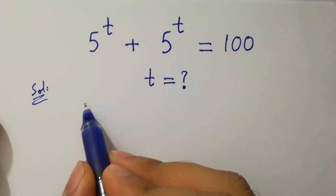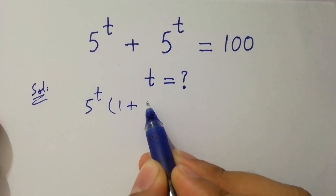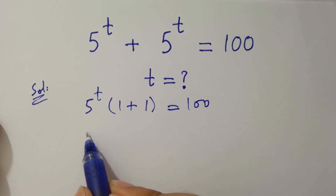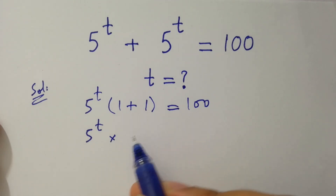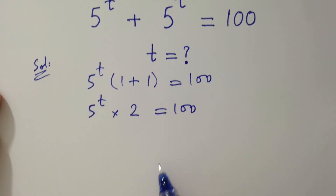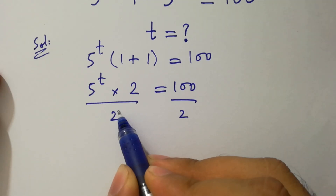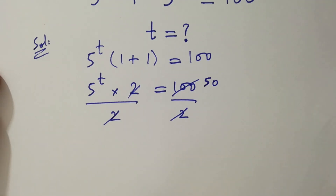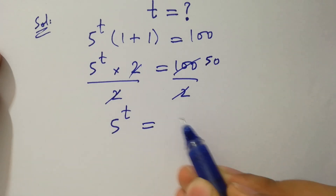We can factor out 5 to the power t. We have 1 plus 1 equal to 100, so 5 to the power t times 1 plus 1 is 2, equal to 100. Dividing by 2 on both sides, 2 and 2 cancel and we have 2 times 50 is 100. It will be 5 to the power t equal to 50.